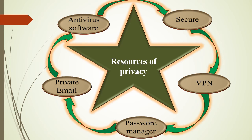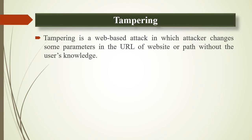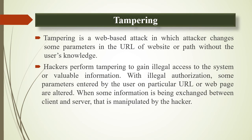After all, privacy is meaningless without security. The problem is that many antivirus solutions compromise your privacy and may come with some unwanted additional features. The next topic is tampering. Tampering is a web-based attack in which attackers change some parameters in the URL of a website or path without the user's knowledge. Hackers perform tampering to gain illegal access to the system or valuable information. With illegal authorization, some parameters entered by users on a particular URL or web page are altered when information is being exchanged between client and server, and that is manipulated by the hackers.